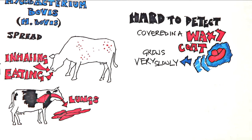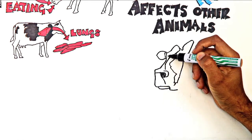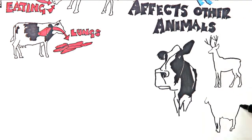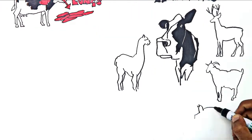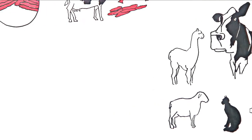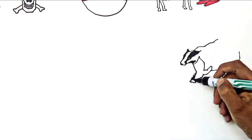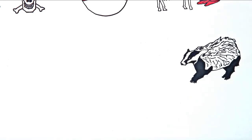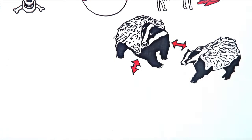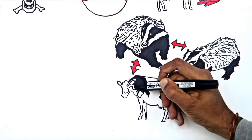Although bovine TB is known as a disease of cattle, it can also affect other animals. High levels of M. bovis infection can spread to animals such as deer, goats, alpacas, pigs, sheep, and even cats, although these animals play little part in spreading the infection to cattle. In parts of England where there are high levels of bovine TB, badgers are significant carriers of the M. bovis bacteria. As well as spreading between badgers, the bacteria can spread from badgers to cattle and vice versa.